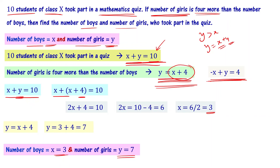Let's verify: 3 plus 7 equals 10, which is the total number of students. And y equals 7, which is 4 more than x equals 3. So the solution satisfies both statements. This is exactly what we were asked to find.